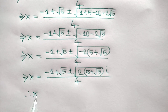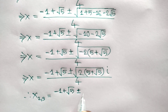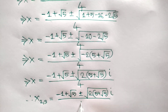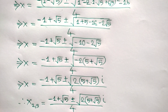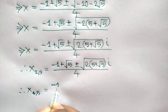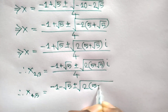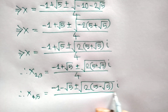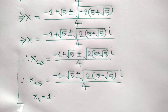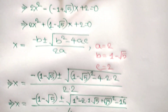So x₂ and x₃ equal minus 1 plus square root of 5 plus or minus square root of 2 times (5 plus square root of 5) times i, all over 4. And x₄ and x₅ equal minus 1 minus square root of 5 plus or minus square root of 2 times (5 minus square root of 5) times i, all over 4. The first value x₁ equals 1, giving us all five values of x. Thanks for watching — if you like this video please subscribe to my channel, see you in the next video, bye bye.